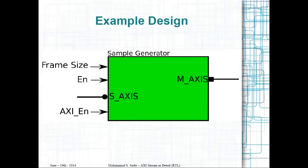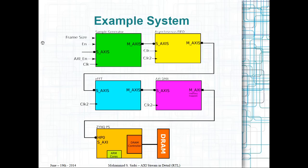The story, if you have watched the previous videos, is that we created a wrapper representing a block called 'sample generator.' It has one AXI slave stream interface and one AXI master stream interface, plus a set of control signals. We just created the ports for this module, and today I'm going to write the RTL code inside. In previous videos we also created this system and showed how these blocks are connected together.